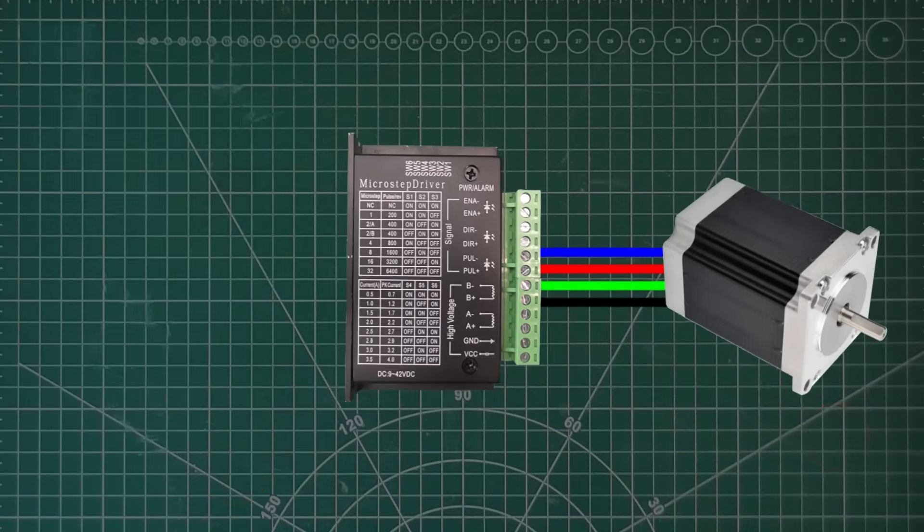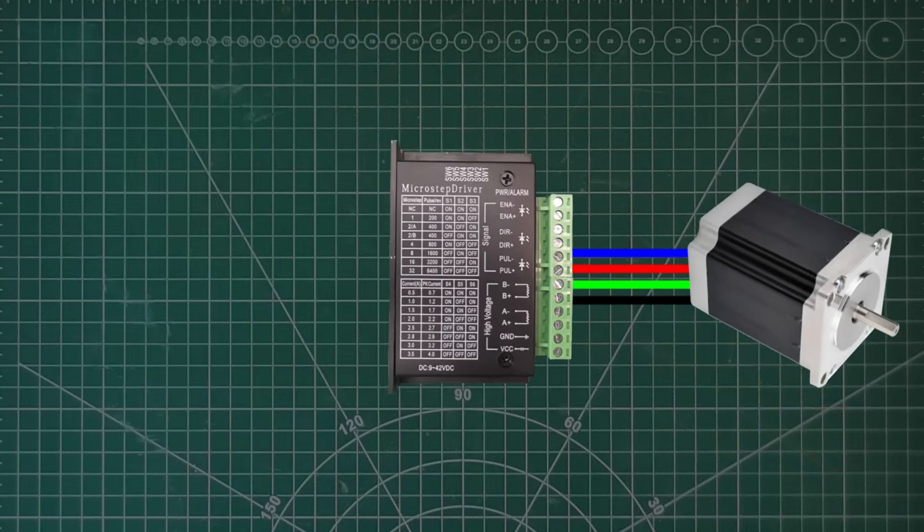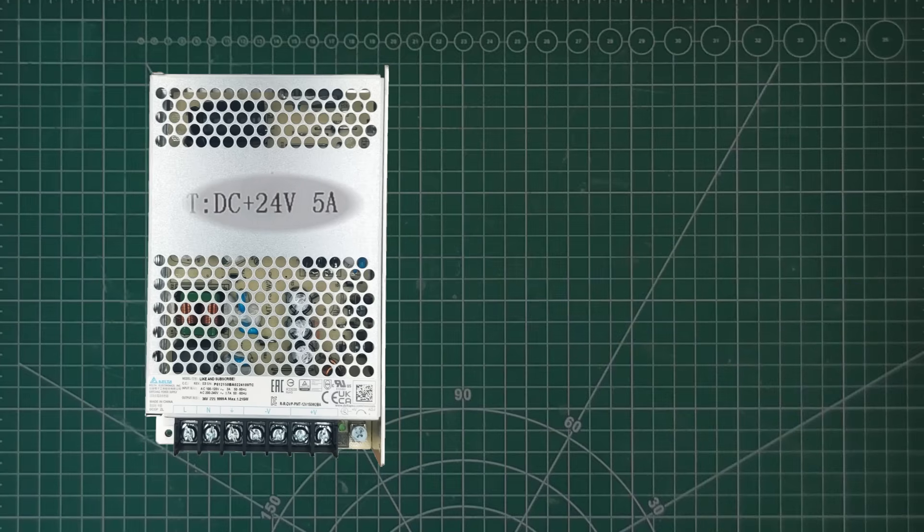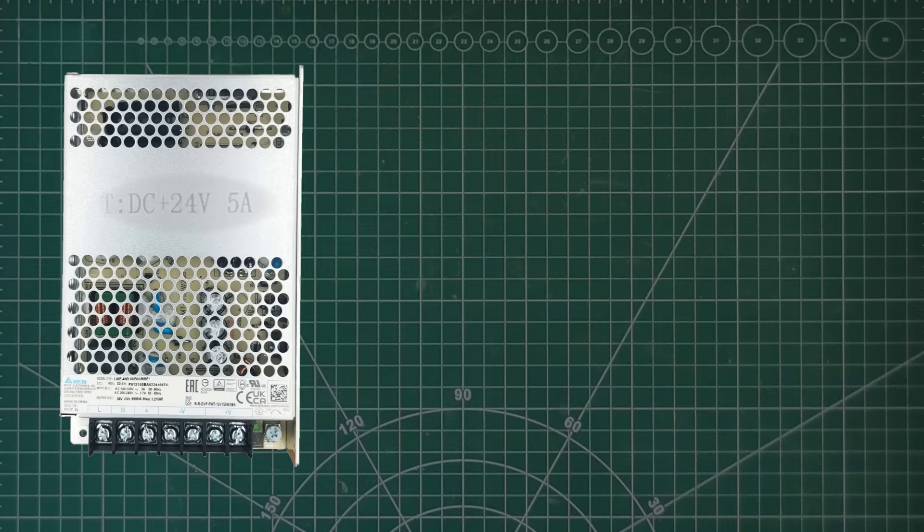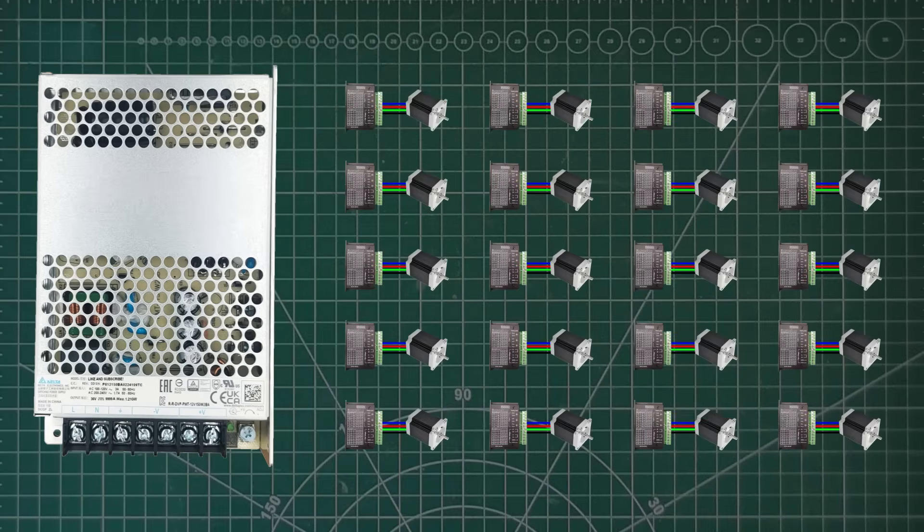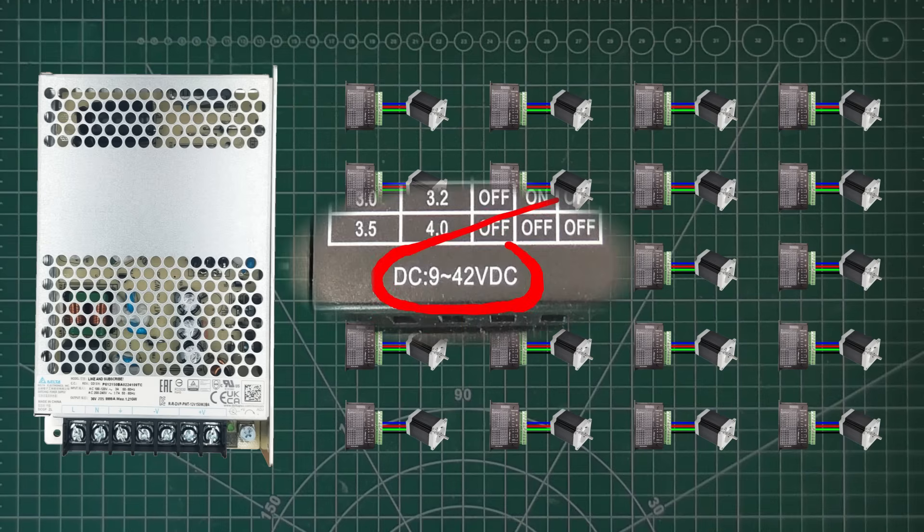But wait, if this motor and driver are only drawing a quarter of an amp from this 5 amp supply, does that mean I can run up to 20 of them off of this one supply? And if the motor is only 3 volts, why do I have to use a power supply that's up to 42 volts? And how does the driver convert the higher voltage into the lower voltage?